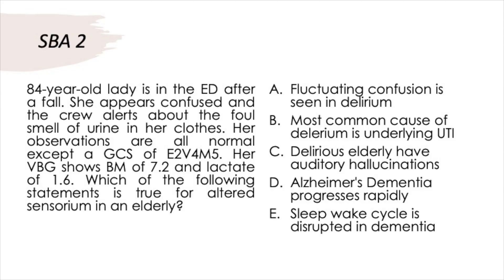Question two: Which of the following statements is true for altered sensorium in an elderly patient? Options: fluctuating confusion is seen in delirium; most common cause of delirium is an underlying UTI; delirious elderly have auditory hallucinations; Alzheimer's dementia progresses rapidly; or sleep-wake cycle is disrupted in dementia. An 84-year-old lady is in the ED after a fall, appearing confused, with a GCS of E2V4M5 and foul-smelling urine.